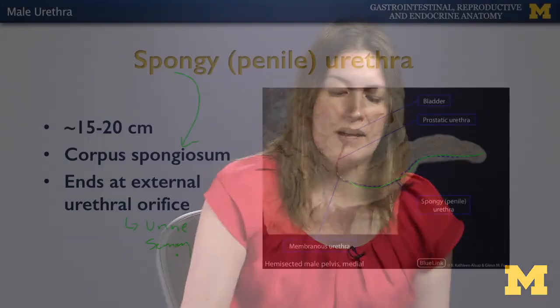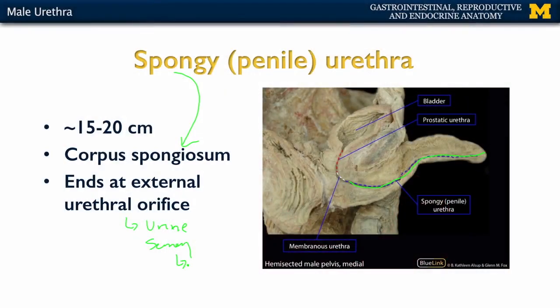Now that we have an understanding of how urine and semen exit the body, let's talk about some of the components of semen and what's actually producing those components.